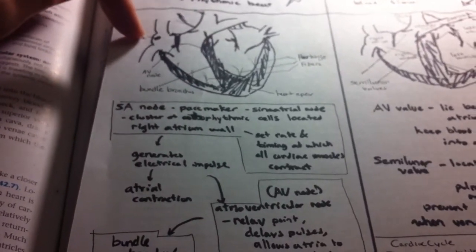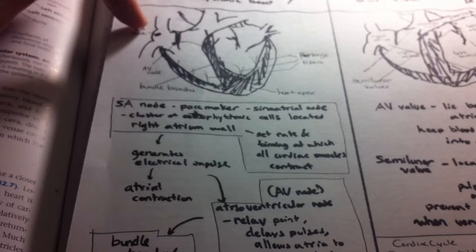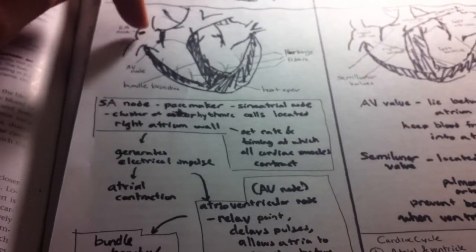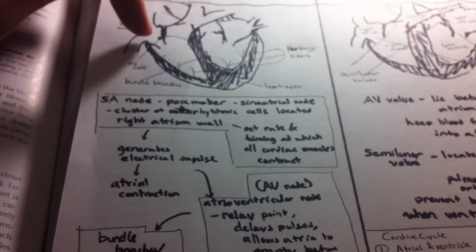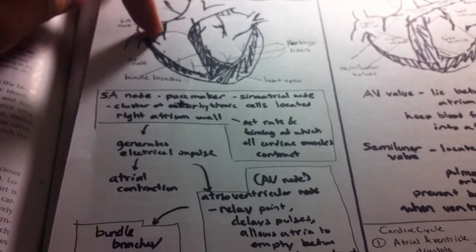Now we don't want to get ahead of ourselves and send the blood to the arteries before we send all of our blood from our atria to the ventricles. So what we do is send the electrical impulse to the AV node and the AV node will act as a relay point.